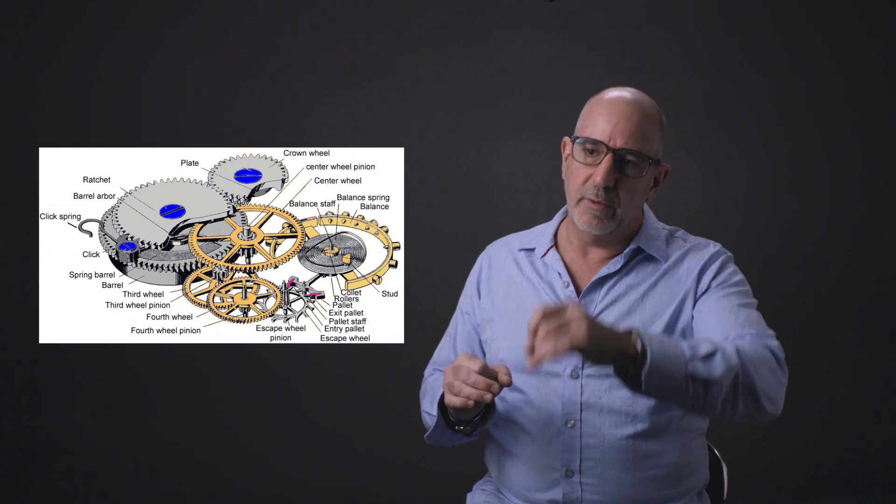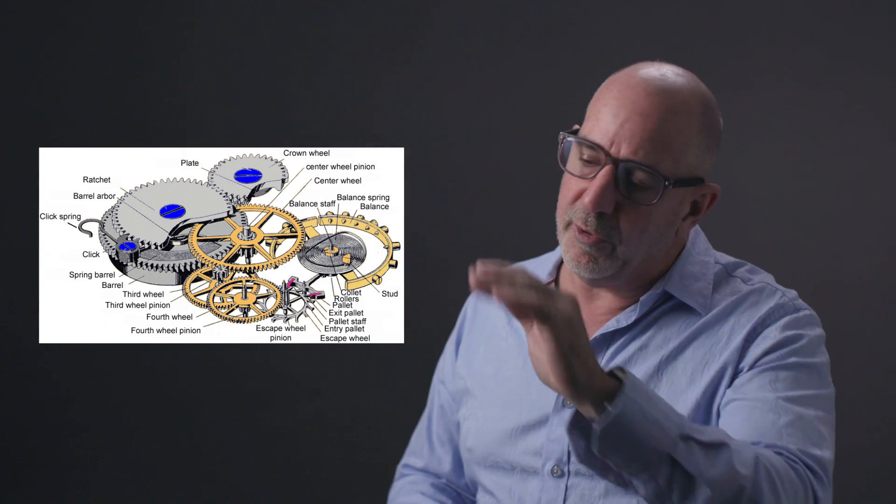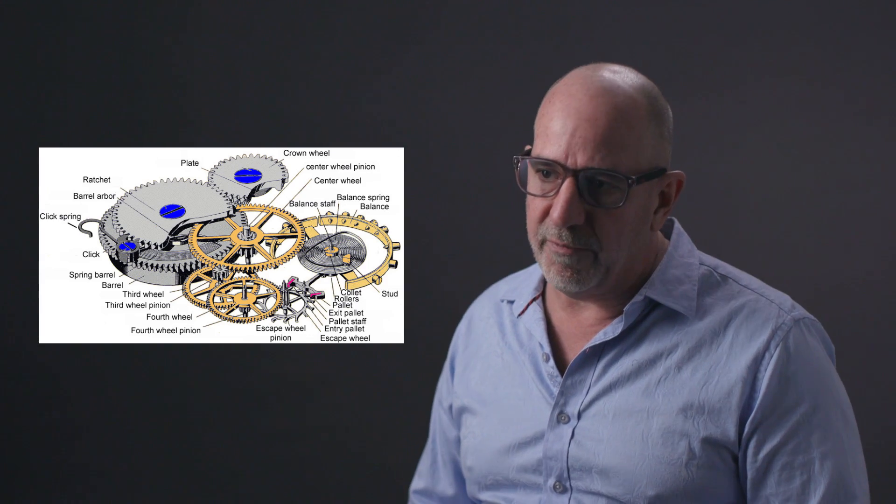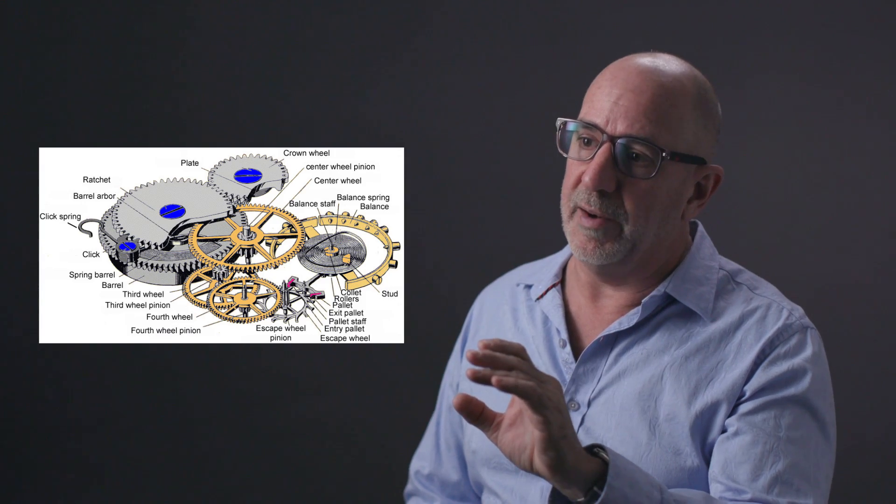You start with the barrel, you go to your great wheel, you go to your third wheel, you go to your fourth wheel, escape wheel. As you go down that line, the wheels get smaller and smaller, the teeth get finer and finer, the pivots get finer and finer, because you have less power towards the end of that train.